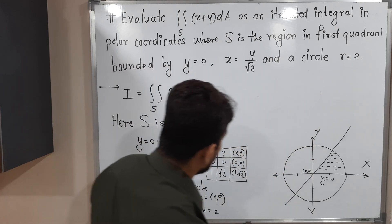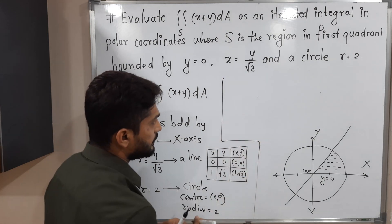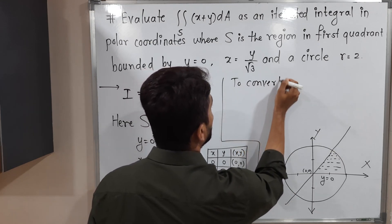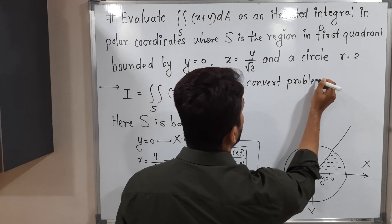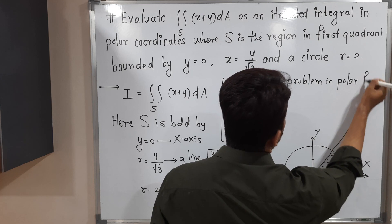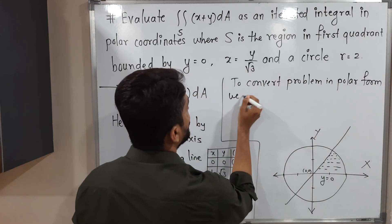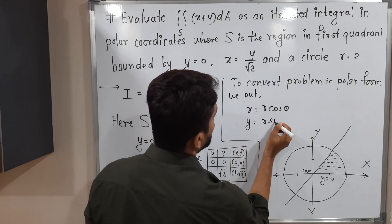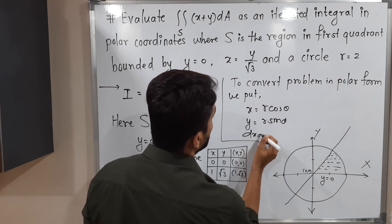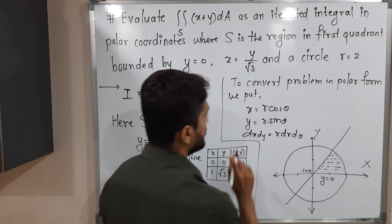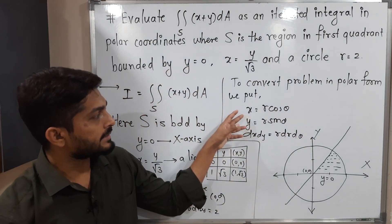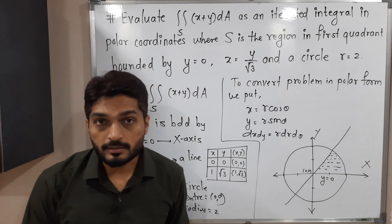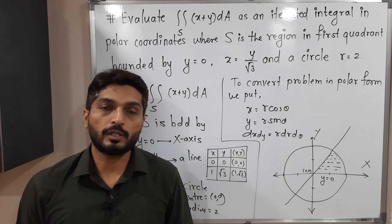There is a standard substitution to convert a problem into polar form. We put x equal to r cos θ, y equal to r sin θ, and dx dy equal to r dr dθ. So to convert the problem into polar form we use these substitutions, and therefore dx dy becomes r dr dθ. Our next task is to convert all equations into polar form so we can solve the problem easily.